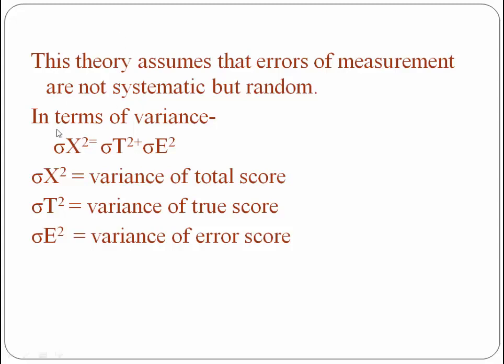What is the meaning of variance? Variance means the contribution of any particular score. So the total score variance is the contribution of true score variance plus error score variance. The total score is thus a combination of both contributions.